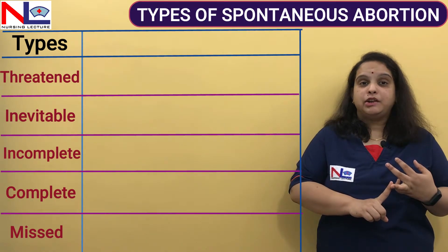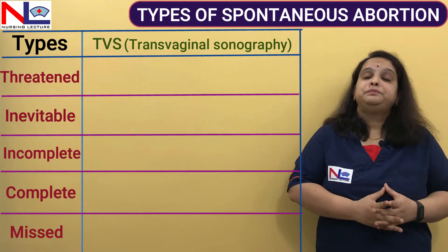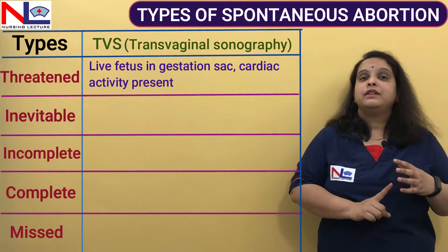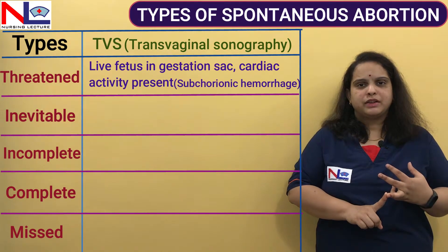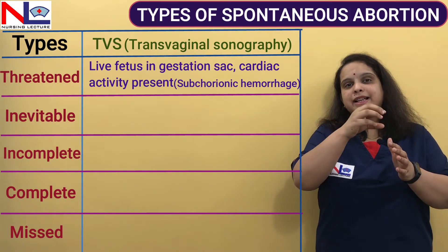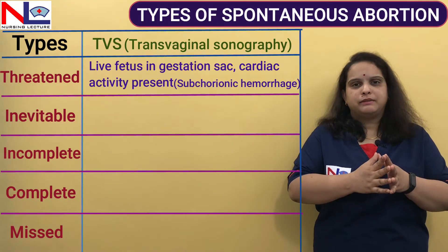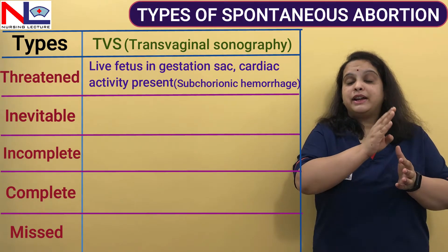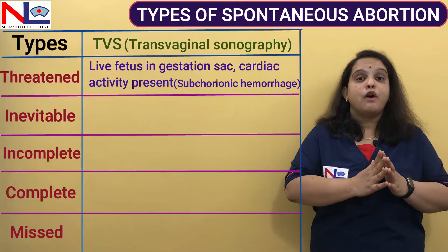Another distinguishing feature is transvaginal sonography — a gold standard technique. In threatened abortion, sonography shows a true gestational sac with a live embryo and cardiac activity present. There may also be a subchorionic hematoma — an accumulation of blood between the chorion and the decidua at the site where the fetus has partially detached from the uterine wall — but the fetus is alive and cardiac activity is present.